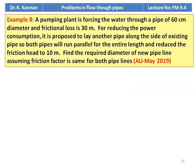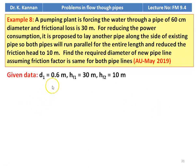Example number 8 from May 2019 question paper. A pumping plant is forcing water through a pipe of 60 centimeter diameter and the frictional loss is 13 meter. To reduce power consumption, it is proposed to lay another pipe alongside the existing pipe so both run parallel over the entire length, reducing the friction head to 10 meter. Find the required diameter of the new pipeline, assuming friction factor is the same for both. Data: D1 = 0.6 m, H1 (single pipe) = 30 m, H2 (two parallel pipes) = 10 m.